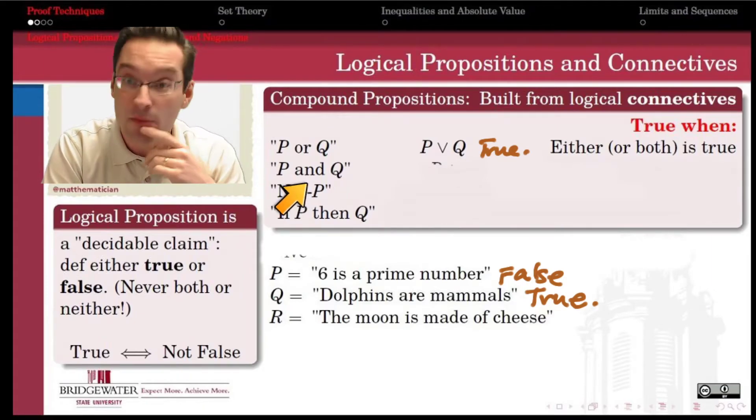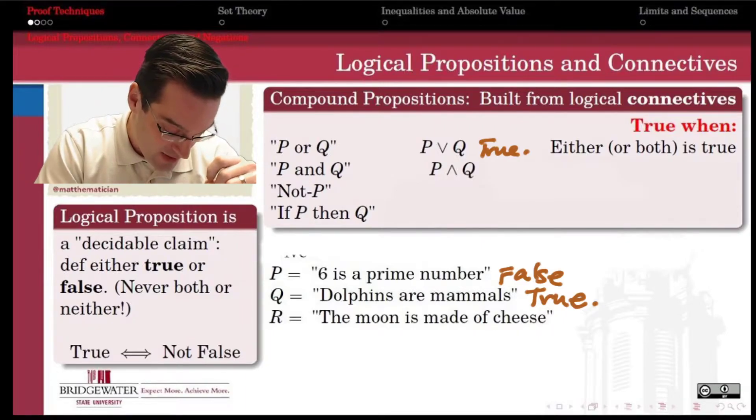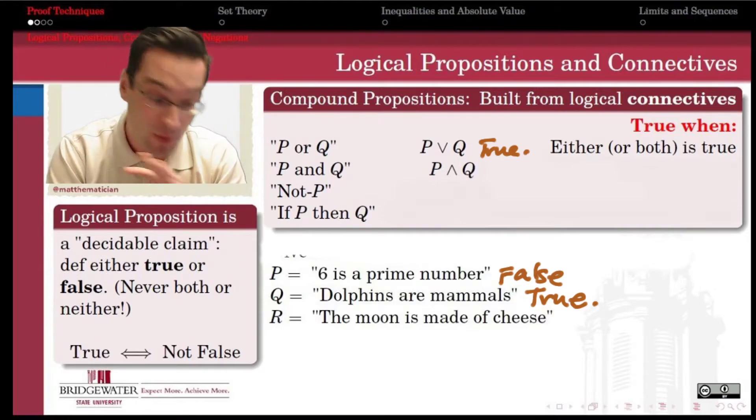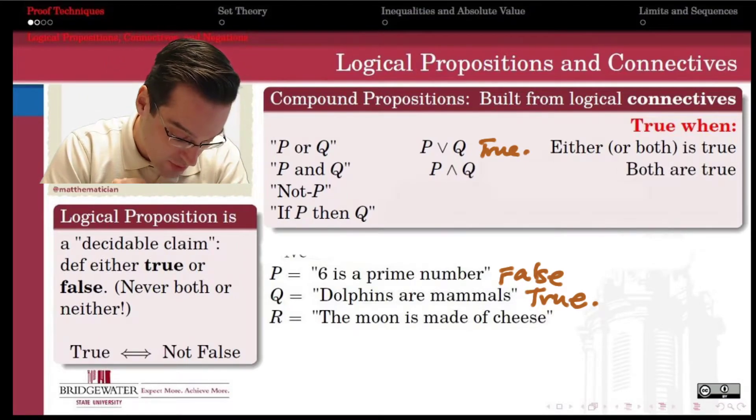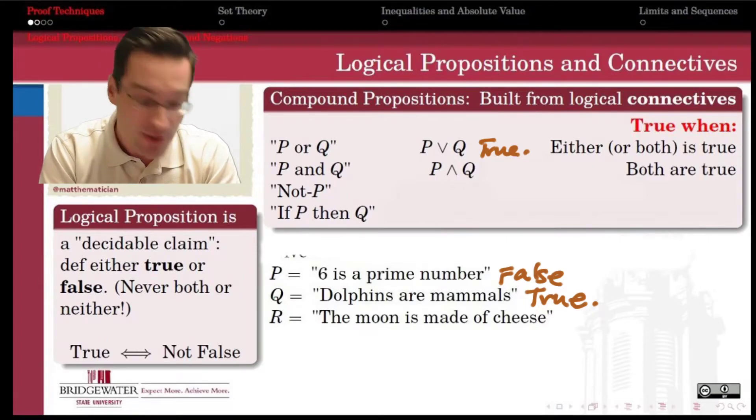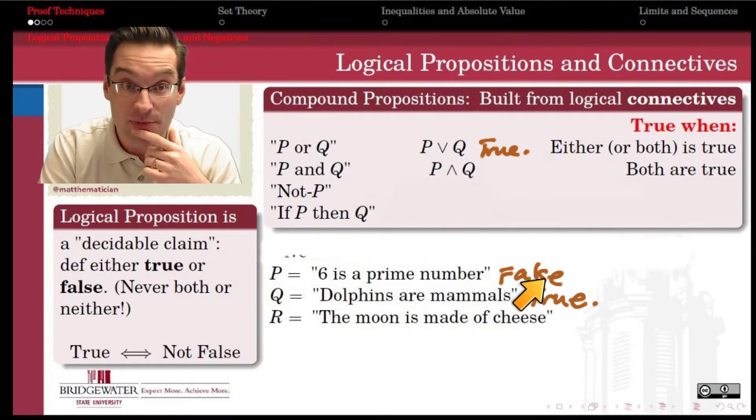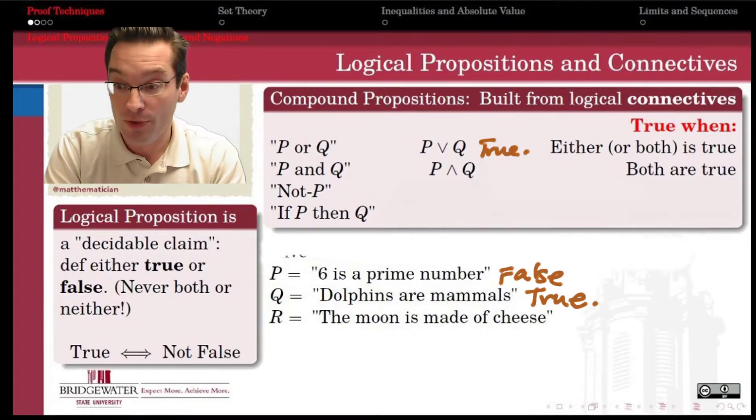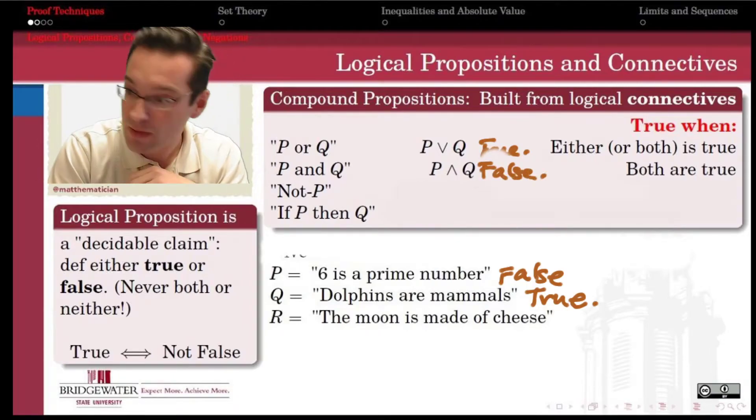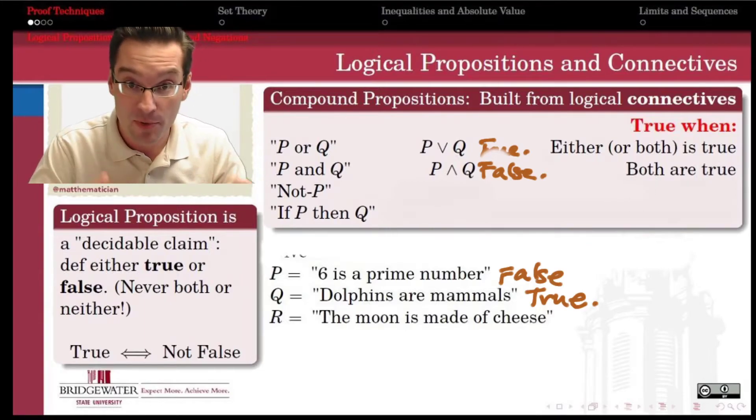That stands in contrast to the second of our connectives, the AND connective. We call it the logical conjunction. Instead of a V symbol, we use an upside down V looking symbol to denote the AND, the logical AND. A conjunctive statement, an AND statement, is true only when all of its pieces are true. In order for P and Q to hold, we need P and Q to both be true. In our example here, 6 is a prime number and dolphins are mammals. Well, one of these statements is true, but the other one is false. And so as soon as one of the individual pieces is false, that makes the whole statement false. The AND statement here is false because in order for it to be true, we would have needed both of the pieces to have been true. That's the big difference between an AND and an OR.